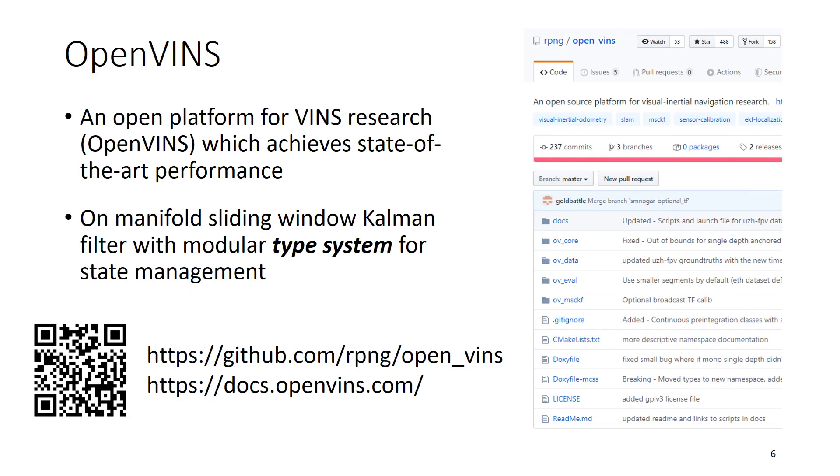OpenVINS is an open platform for visual inertial research which achieves state-of-the-art performance. Under the hood, it's an on-manifold sliding window common filter with a modular type system for state management. Please check out our GitHub and our documentation website.